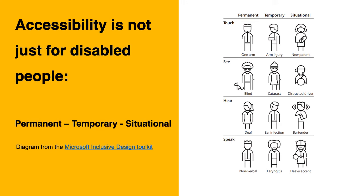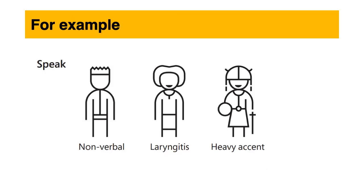Quite often when we speak about disability, we think of permanent and visible disability. But you can be injured and be temporarily affected the same way as a person who is permanently disabled. Or a situation can make you experience a similar issue. This diagram from Microsoft is a good illustration of that. For example, a person can be permanently non-verbal for various reasons, and this will be a barrier when you use a voice recognition system like Alexa. But you will be affected just the same if you have laryngitis. And this is also something that someone with a strong accent, like me, could struggle with.